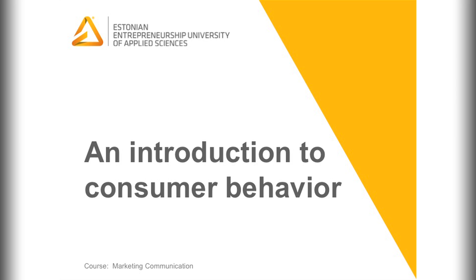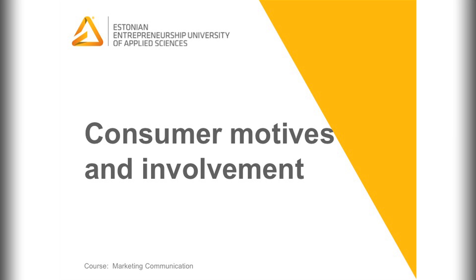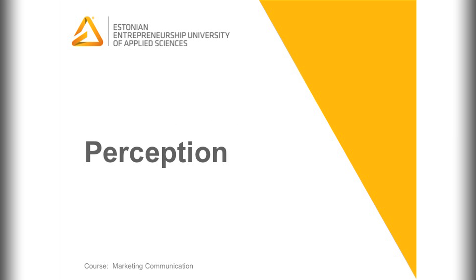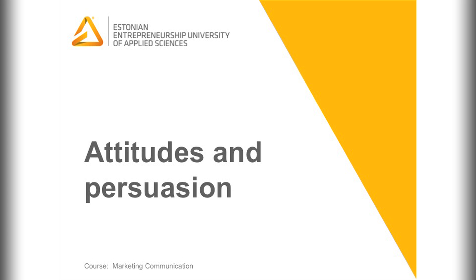The course consists of ten different parts. The first part includes the basic model of Engel, Kollat and Miniard, and other parts cover the components of the model: motives and involvement, perception, learning and memory, and attitudes and persuasion.